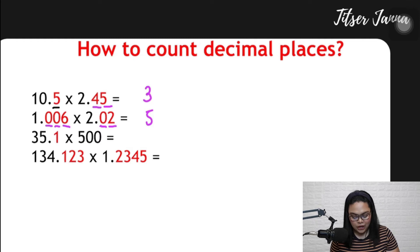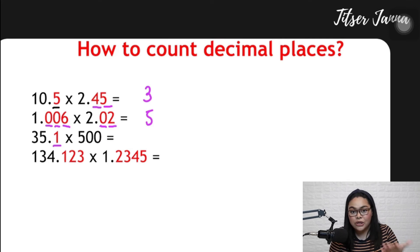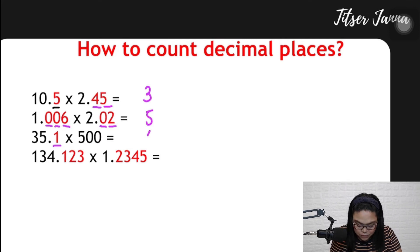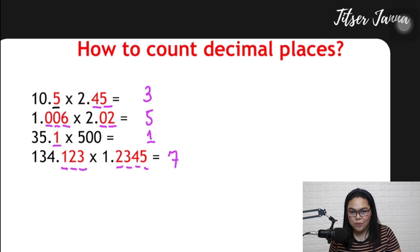In the third example, we have one decimal place only. Because 500 doesn't have a decimal point, so it also has no decimal place. So we only have one. In the fourth example, we have one, two, three, four, five, six, seven decimal places. So I hope you get that.